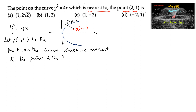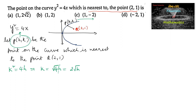Which is nearest to the point (2, 1). Since the point P(h, k) is on the curve, we can write k² = 4h, or k = √(4h) = 2√h. So we can also express the point P as (h, 2√h).